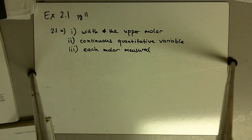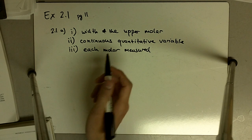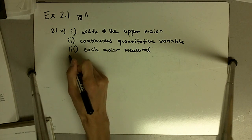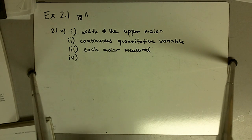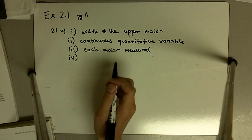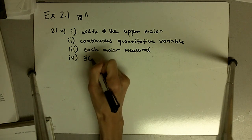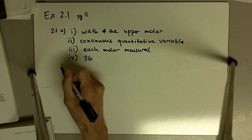And again, each specimen just has one molar measured. There's 36 specimens and each specimen only has one molar. And the last part says determine the sample size. And we've got 36 in our sample, 36 specimens, so our sample size is 36.